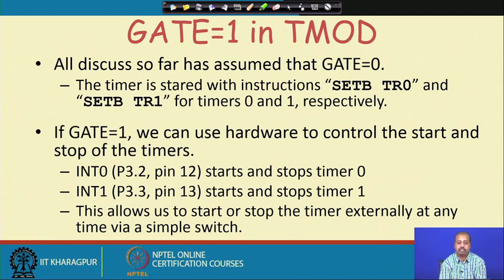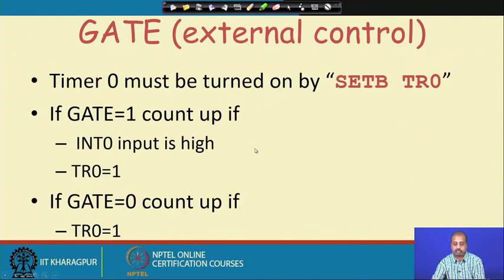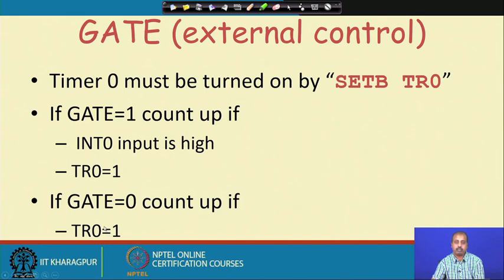If the gate bit is set to 1, then for timer 0 whenever INT0 is activated the timer will operate, and if it is deactivated the timer will stop. That way we can control the timer both externally and internally. For turning on the timer from the software side you still use set bit TR0. If gate equals 1, it will count up only if INT0 input is high and TR0 equals 1. For gate equals 0, only TR0 equal to 1 is sufficient.